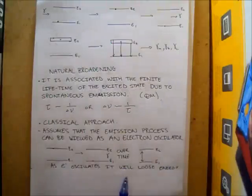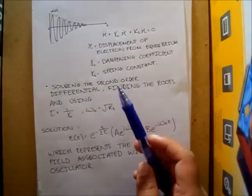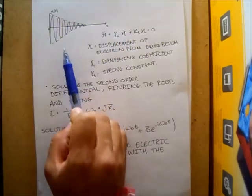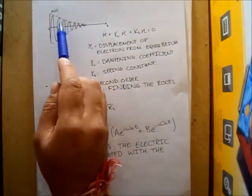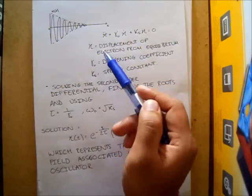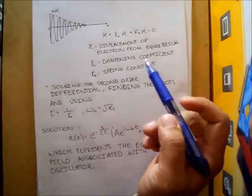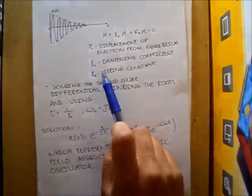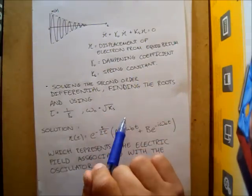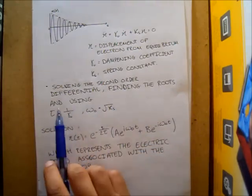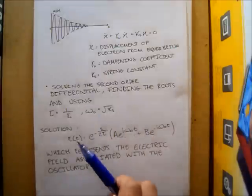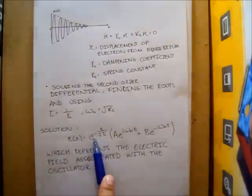The electron releases a photon and goes back down to E1, and this happens again and again. As the electron oscillates, it will lose energy. As a result, I can draw a graph representing the electron oscillation being dampened — time on the x-axis and the position of the electron on the y-axis — and eventually it tends to dampen. This graph is governed by an equation of motion, a second-order differential equation similar to those seen in oscillations, where x is the displacement, gamma_0 is the damping coefficient, and k_s is the spring constant.